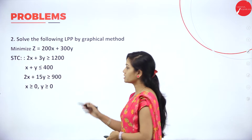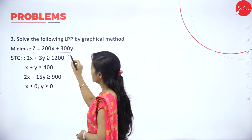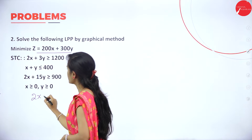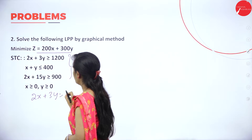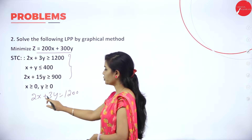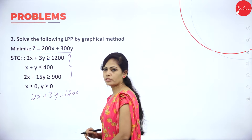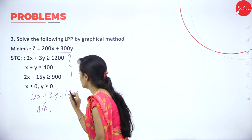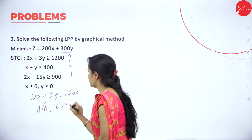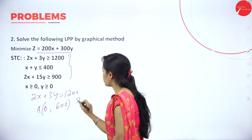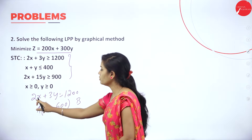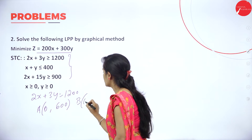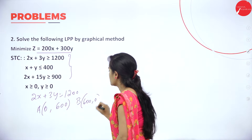This is another case in LPP. The next problem is a minimization problem. Again, convert this into standard form. The first equation is 2x plus 3y equals 1200. Put x equal to 0, so point is (0, 600). Put y equal to 0, 2x equals 1200, so x equals 600. Point is (600, 0).